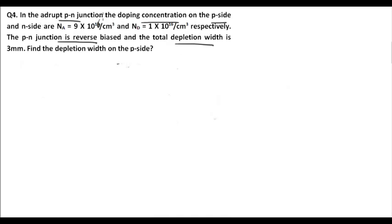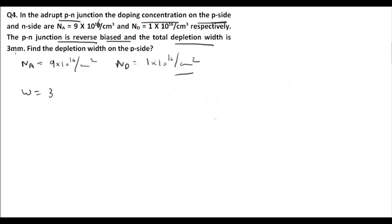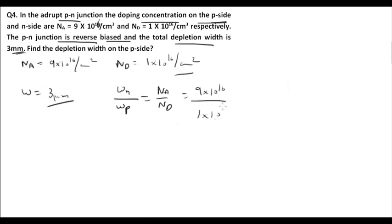Question number four: In an abrupt PN junction, the acceptor density Na = 9 × 10^16 per cm³ and donor density Nd = 1 × 10^16 per cm³. The PN junction is reverse biased and the total depletion width W = 3 μm. Find the depletion width on the p-side. We know that Wn / Wp = Na / Nd = 9 × 10^16 / 1 × 10^16 = 9, so Wn = 9·Wp.